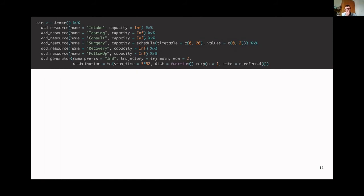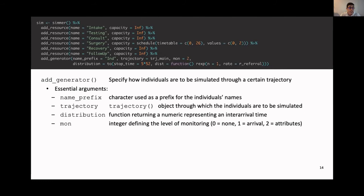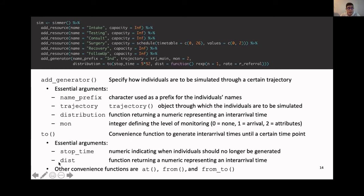The last thing we have to do before we can run the simulation is add the individuals. Using the generator, we can specify how individuals are to be simulated through a certain trajectory. We can specify a prefix for the name, the trajectory they have to go to, and their inter-arrival time, as well as the level of monitoring. So how much detail do we want in the outputs, and that's typically the highest level of detail, which is 2. In this case, I use the 2 argument to only simulate for 5 years, according to a simple exponential distribution for the inter-arrival words.